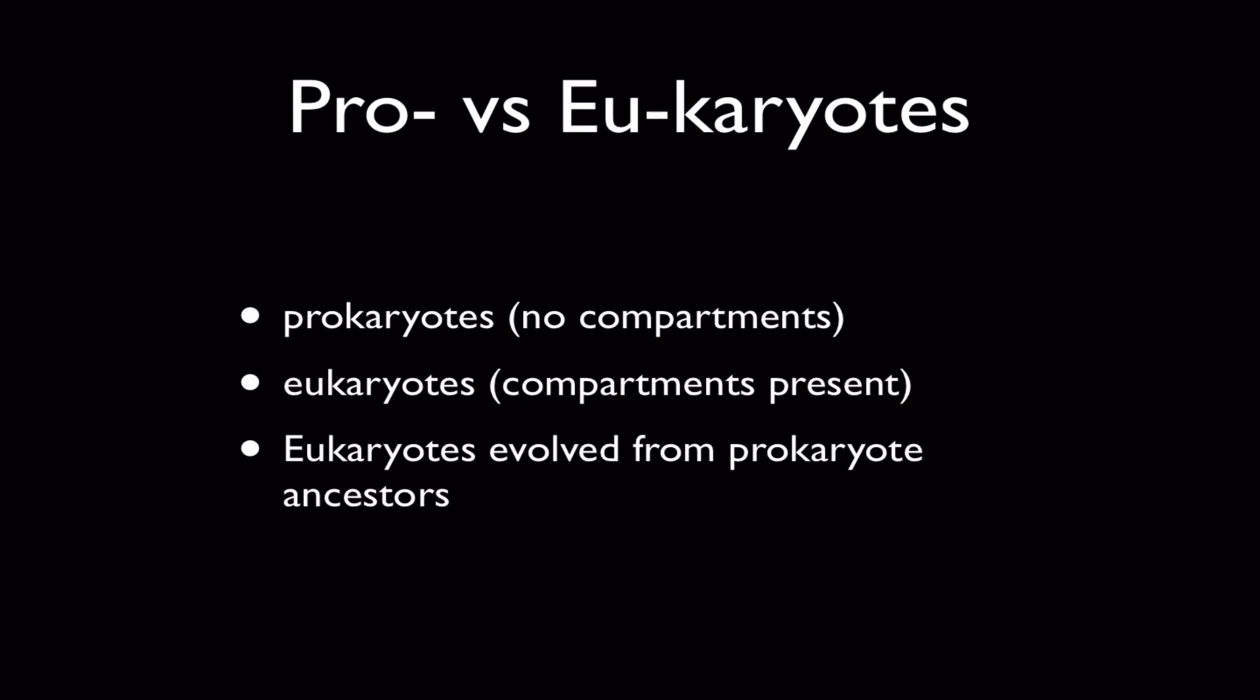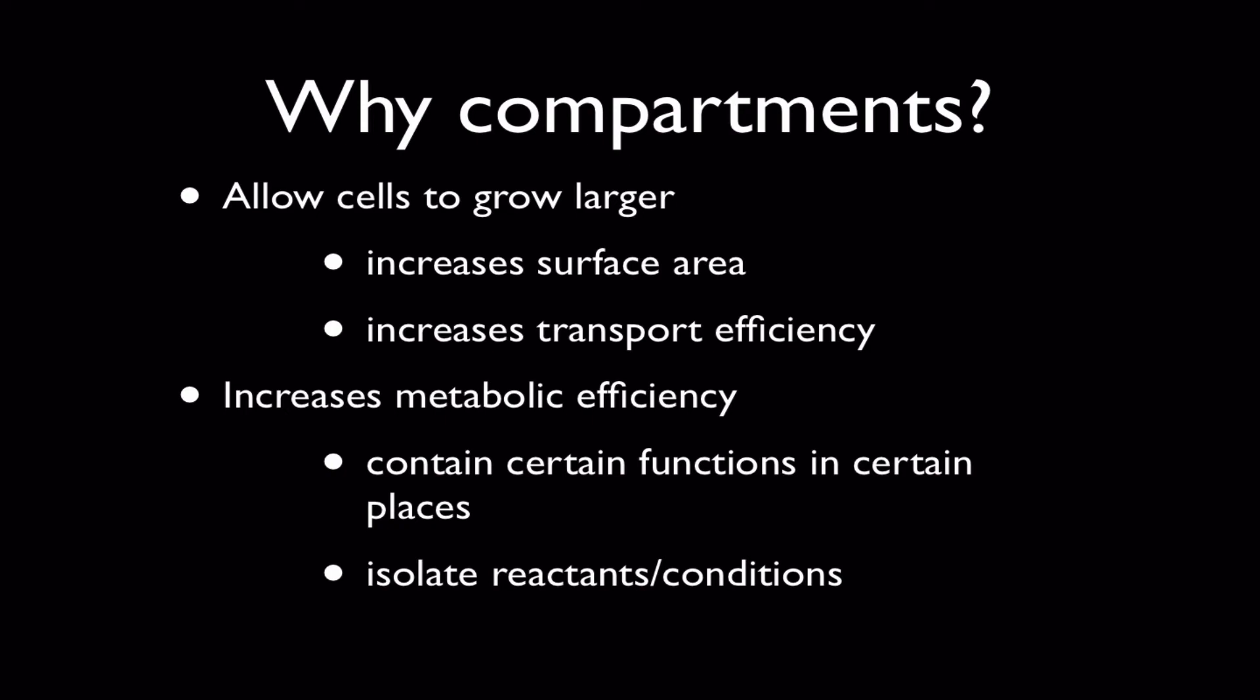So why compartments? Well if a cell has compartments it can grow larger because when you compartmentalize you increase surface area. When you increase surface area you make it easier to transport materials from one place to another by using diffusion. Also if you have compartments you can increase how well the cell can do metabolic processes like digesting things, building things. It increases efficiency. All the materials, all the chemicals, the correct environment can be kept in one place in one compartment or one bag so that everything is closer together and therefore can work more efficiently.